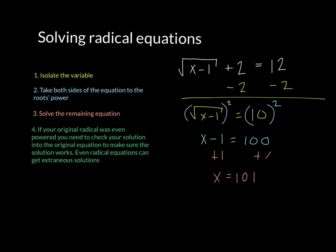Now we've got our value for x, but step 4 is very important. If your original radical was even-powered, so like a square root or a 4th root or a 6th root, you need to check your solution into the original equation to make sure that the solution works. The reason that happens is because even radical equations can get extraneous solutions, which means you may have squared a negative somewhere that shouldn't have been a negative.